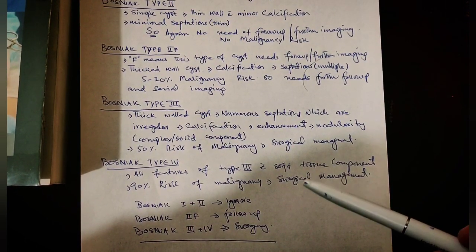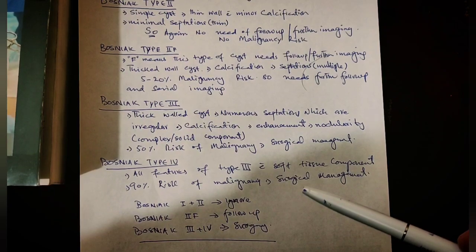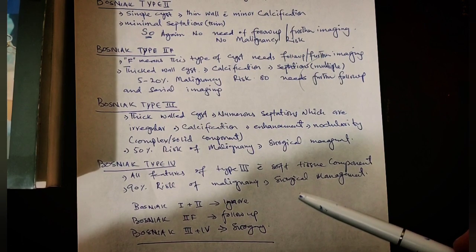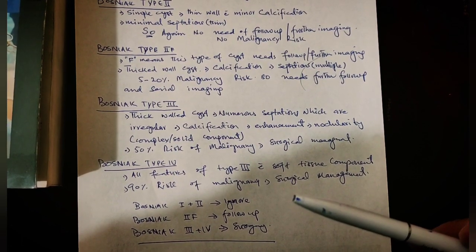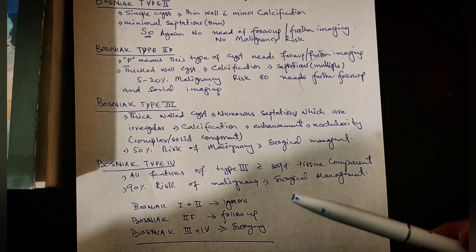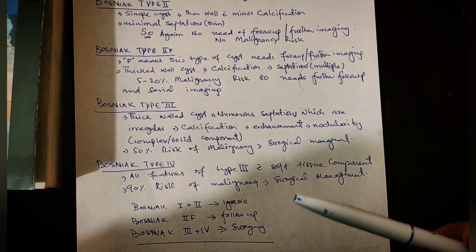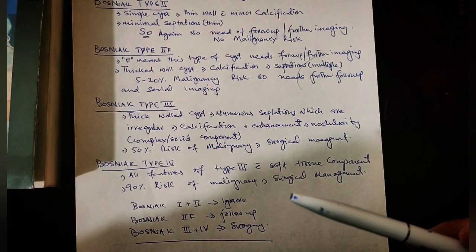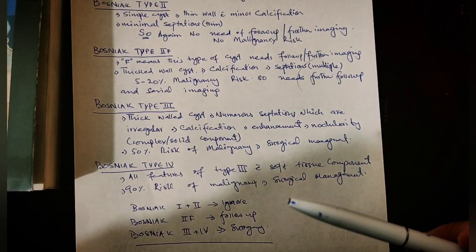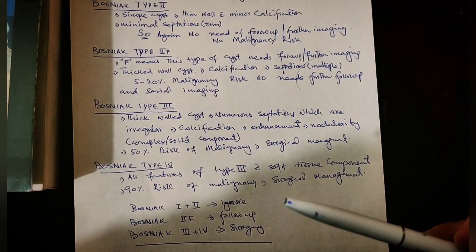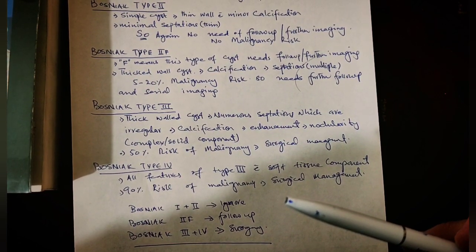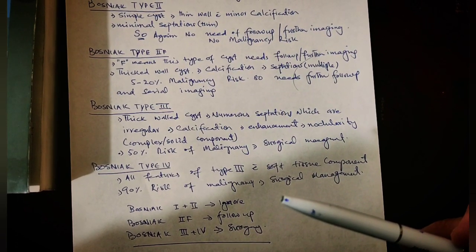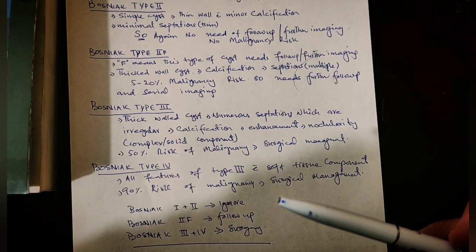Type IV Bosniak cyst contains all features of Type III renal cyst, and along with that there is a soft tissue component. Any patient who has Type IV Bosniak renal cyst means that he or she has 90 percent risk of transformation of such cyst into a malignant lesion. Although there is 90 percent risk of malignancy, some studies say that malignancy is inevitable in such type of renal cyst.